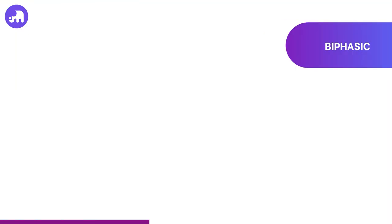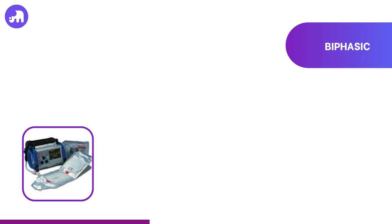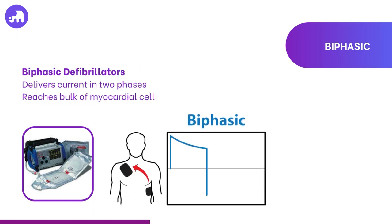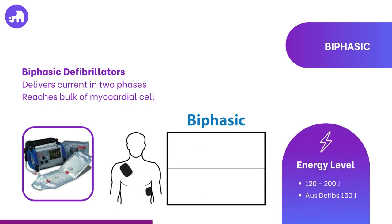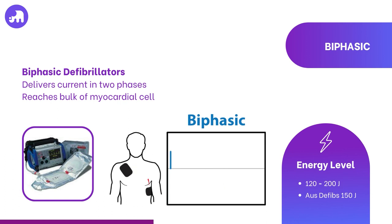In contrast, biphasic defibrillators send the electrical current in one direction and then swiftly reverse its flow, sending it in the opposite direction. This bidirectional flow enhances the chances of successful defibrillation while typically using less energy. For adults, the starting energy levels with biphasic defibrillators generally range from 120 to 200 joules. If the initial shock doesn't achieve its intended result, the energy level can be adjusted based on the patient's response and the device's recommendations.